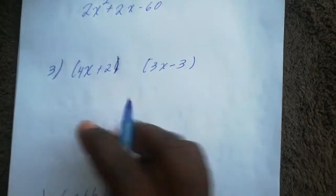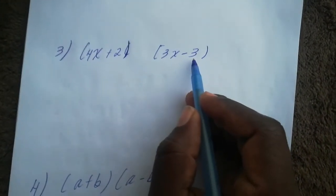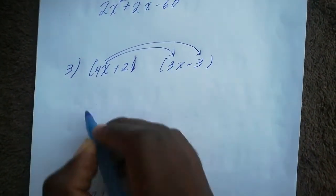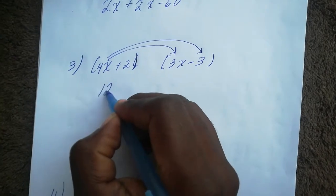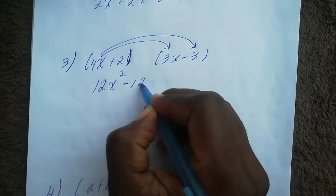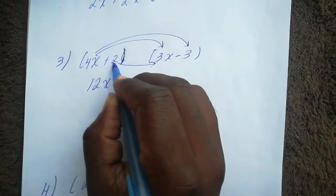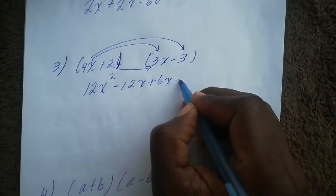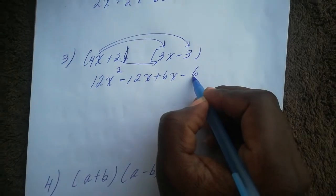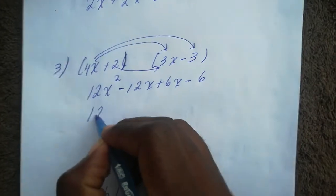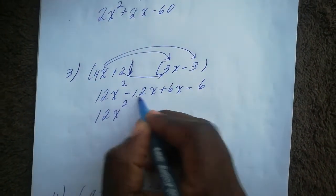The next example is (4x + 2)(3x − 3). Multiplying the first term by everything inside: 4x times 3x gives me 12x squared, and 4x times negative 3 gives me minus 12x. Then positive 2 times 3x gives me 6x, and 2 times minus 3 gives me minus 6. The like terms are already grouped together.